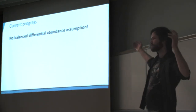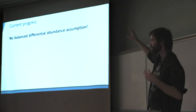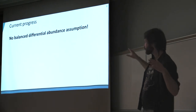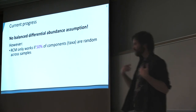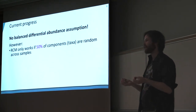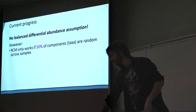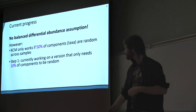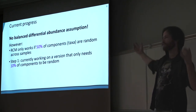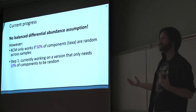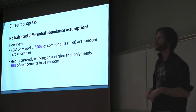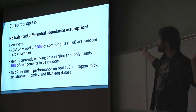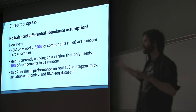This is great news: in datasets where the balanced differential abundance assumption is violated, this solution — which has no balanced differential abundance assumption — works great where no other methods do. However, this method currently only works when at least 50% of your bacterial taxa are random across samples. I'm currently working on a version that works when only 10% of your components are random. Also, this method is not just applicable to bacterial abundances from 16S sequencing — it's applicable to any abundances determined by sequencing: metagenomics, metatranscriptomics, and RNA-seq for any kind of experiment. My final phase is to evaluate the performance of this normalization method on all these different kinds of datasets.